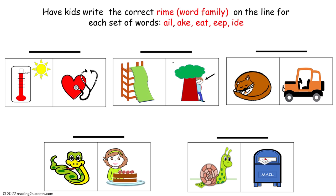Now have kids write the correct rhyme on the line for each set of words. The choices are ale, ache, eat, eep, and eyed. This is the completed example: heat and beat end in 'eat,' slide and hide end in 'eyed,' sleep and jeep end in 'eep,' snake and cake end in 'ache,' and snail and male end in 'ale.'